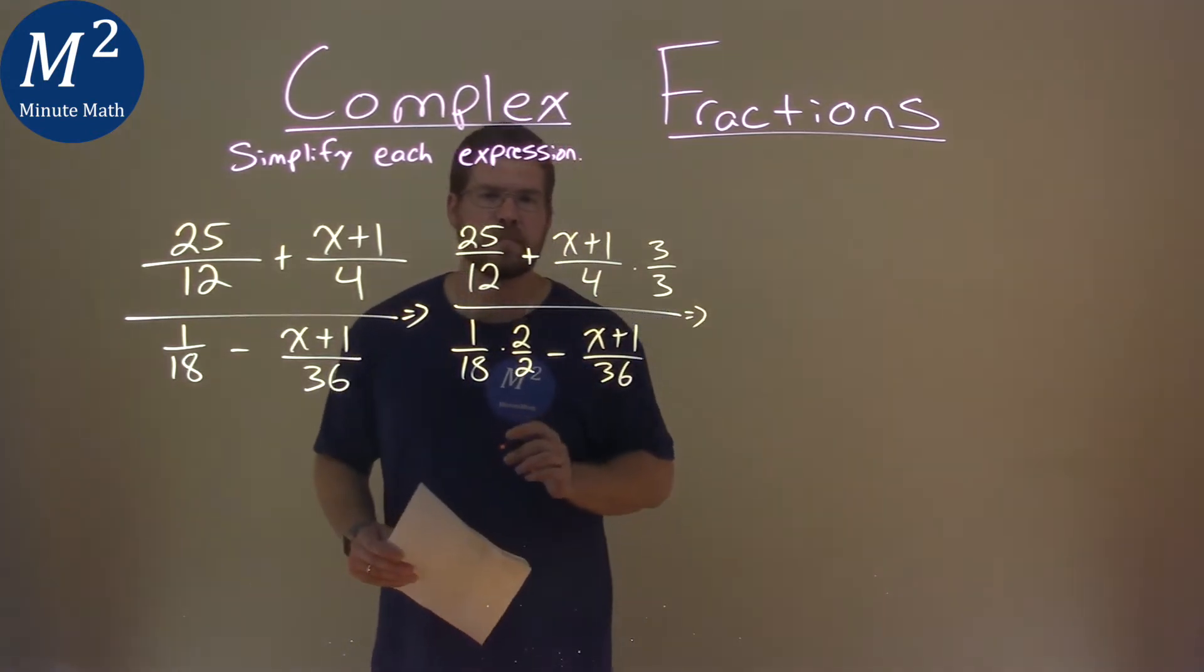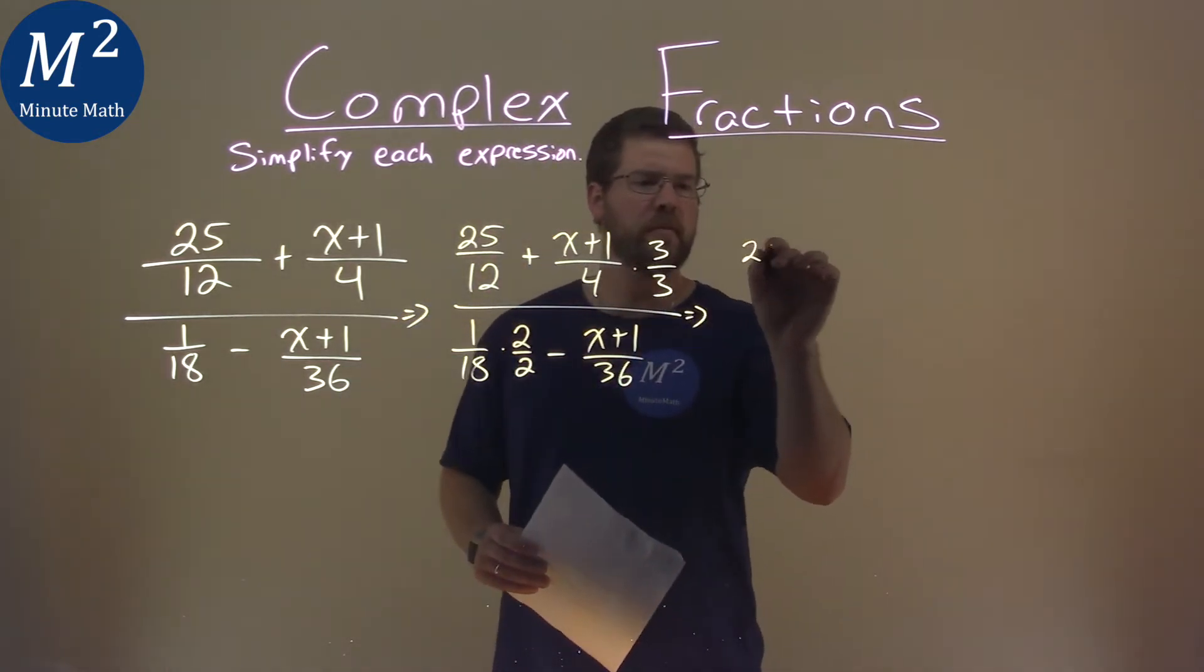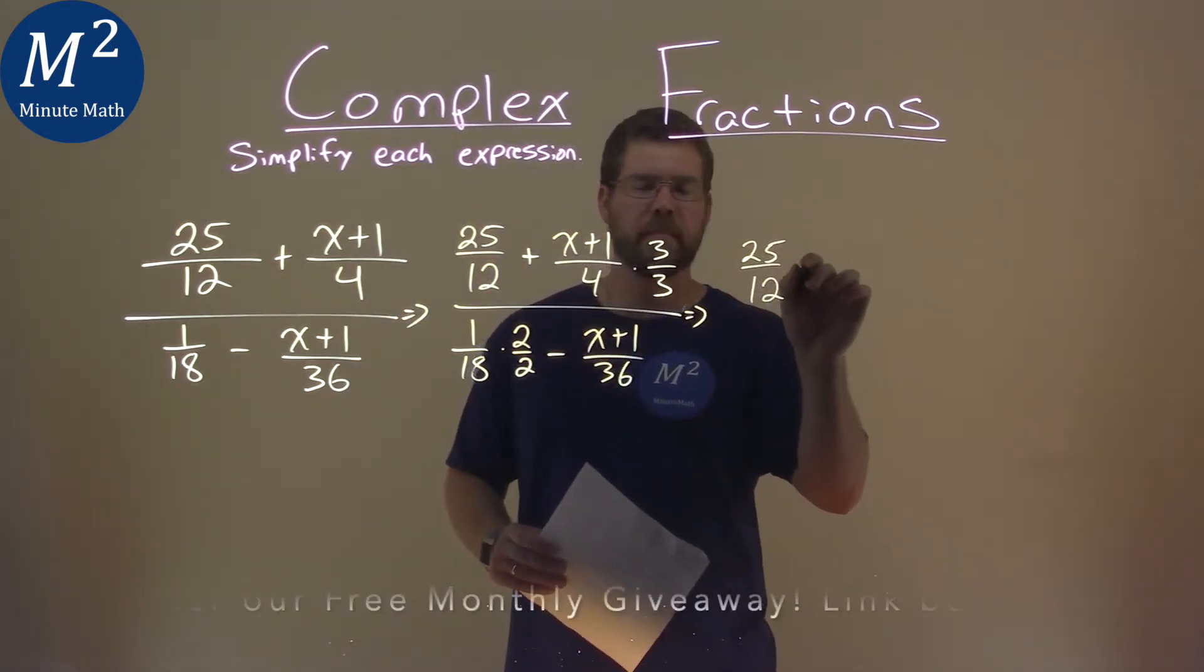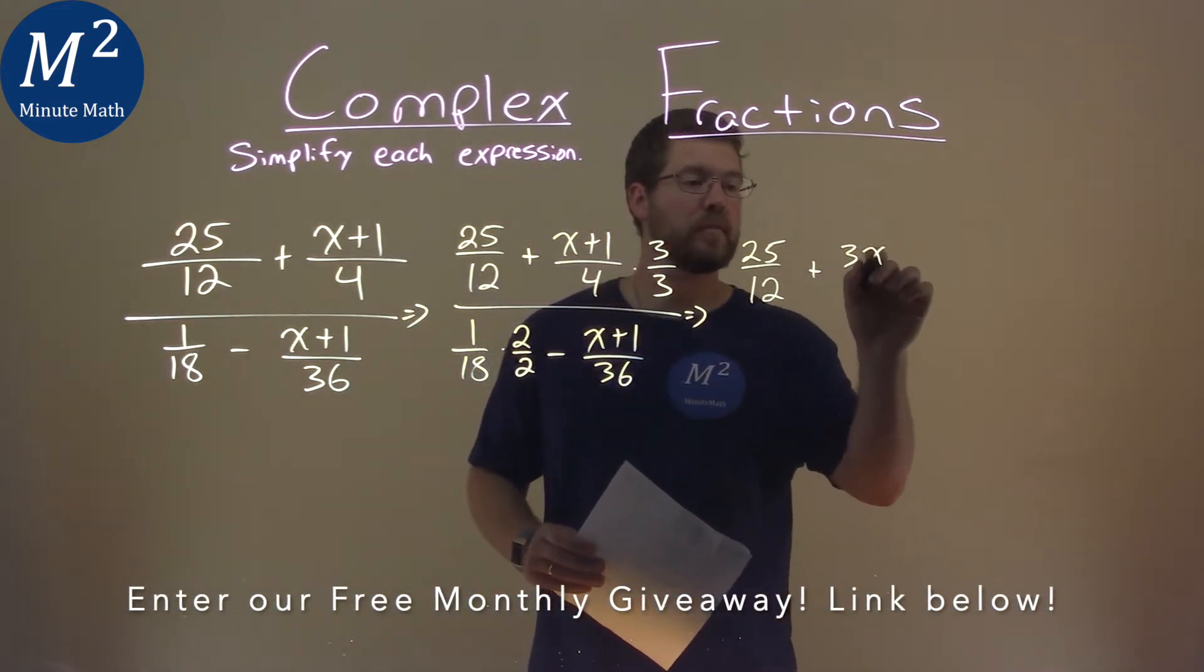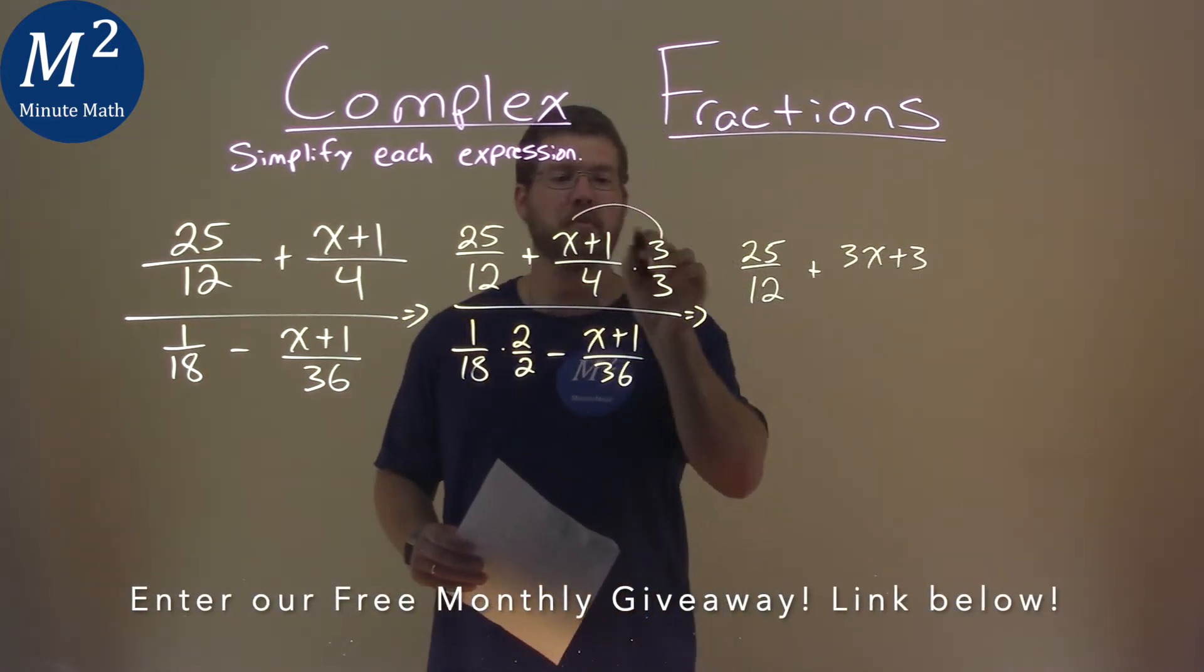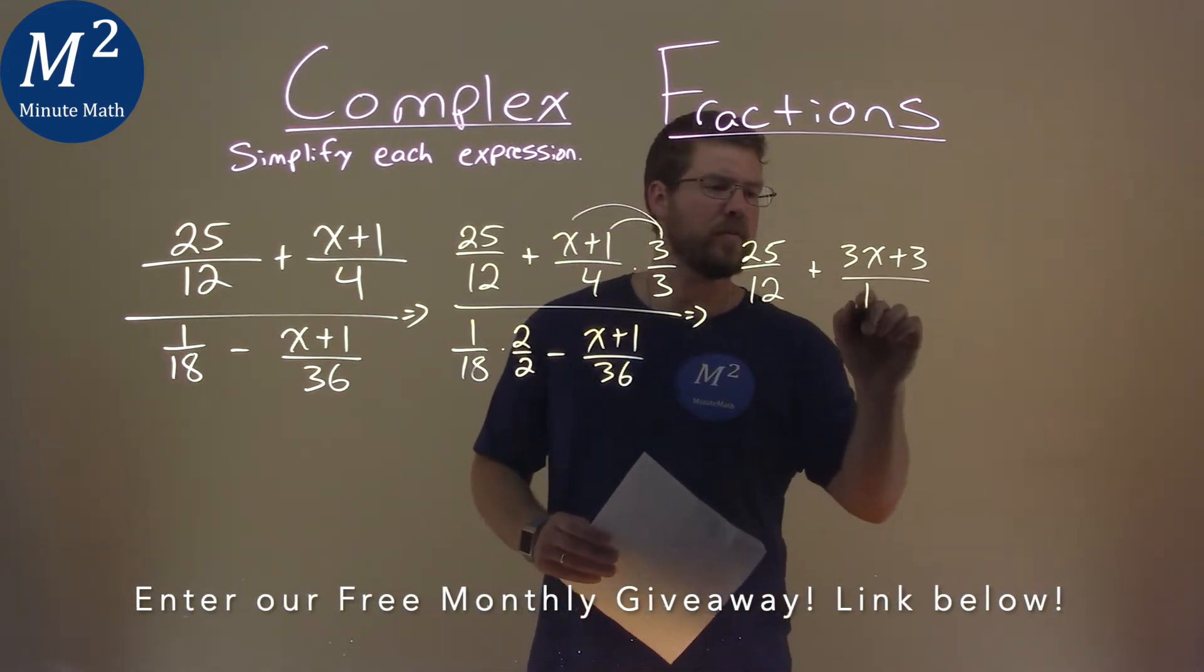So let's see what happens here. This here is just 25 over 12, not too bad. But we're adding x plus 1 times 3 is 3x plus 3. Remember, we're distributing this.